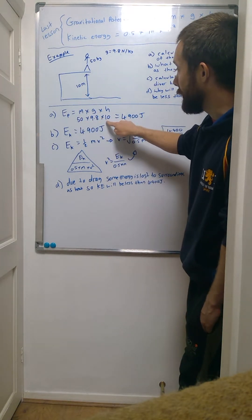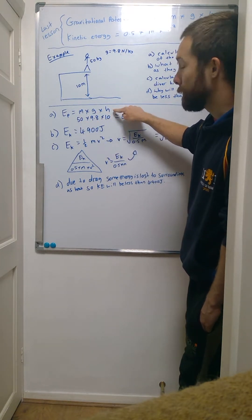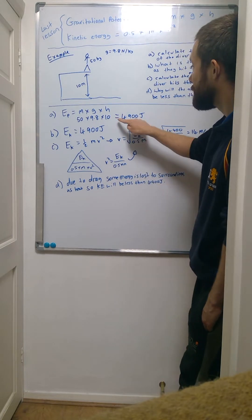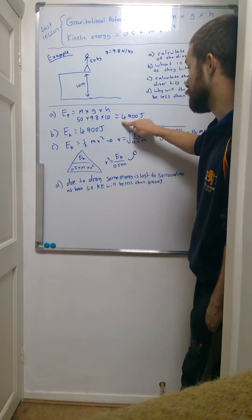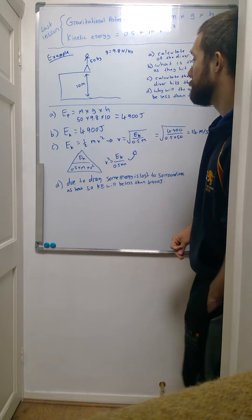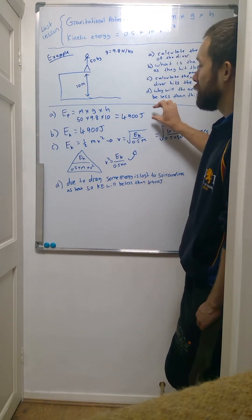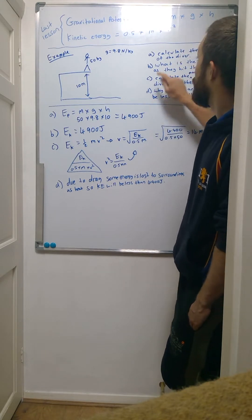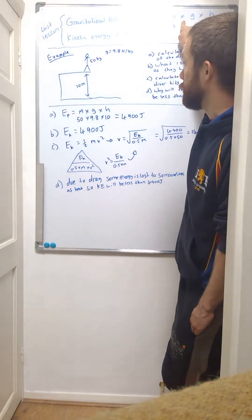We're going to put 50 in, 9.8 for gravity, 10 for the height in meters, and we type that into our calculator and you would get 4,900 joules. I did all this a couple minutes ago. Nice and easy start. Everyone should be able to get that. You have to know this equation. You have to learn this equation.